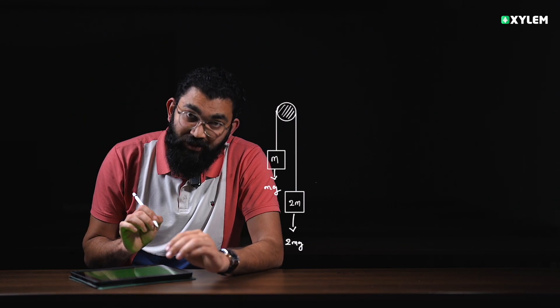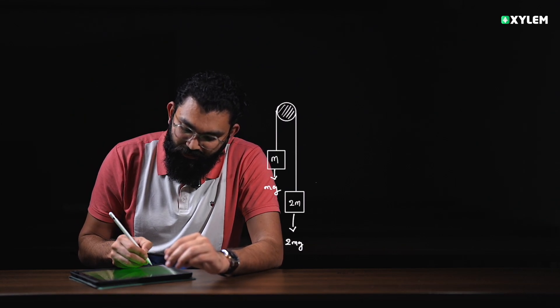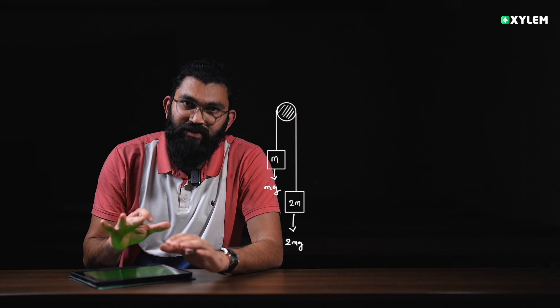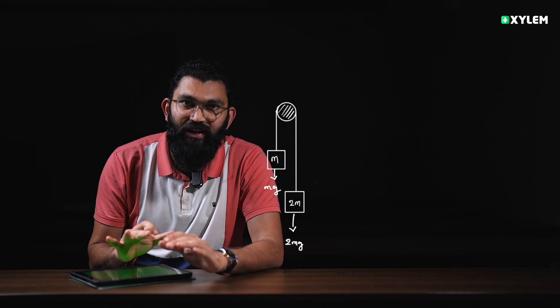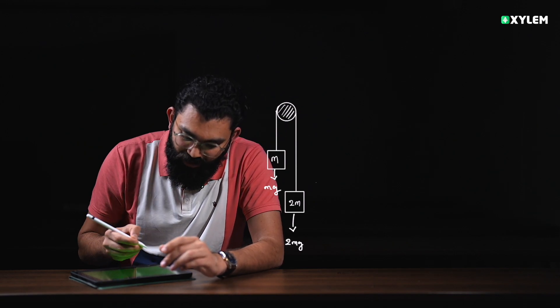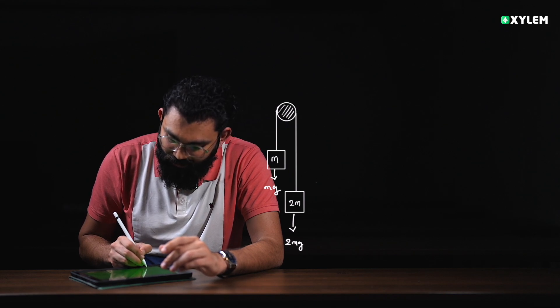In fixed pulley system questions with two blocks, the acceleration is the same for both. The system accelerates in the same direction, and the two blocks have the same acceleration. The two blocks have weights acting in opposite senses — that is, 2mg acting one way.